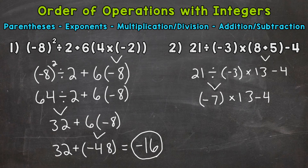Any parentheses? No. Exponents? No. Multiplication or division? Yes, that's what we do next. So we have negative 7 times 13, which gives us negative 91, minus 4.